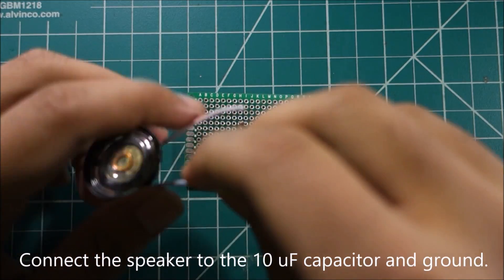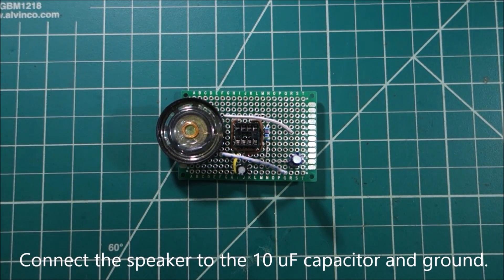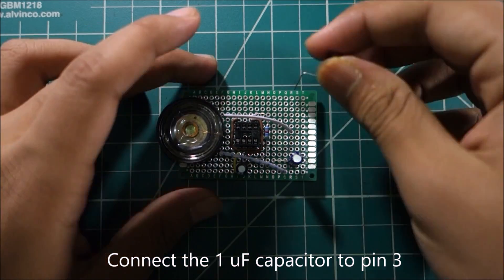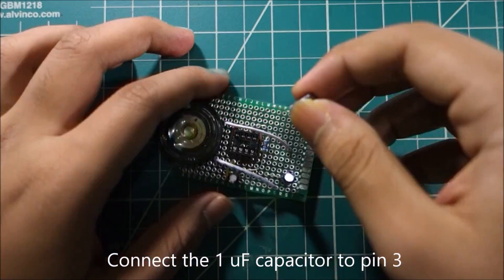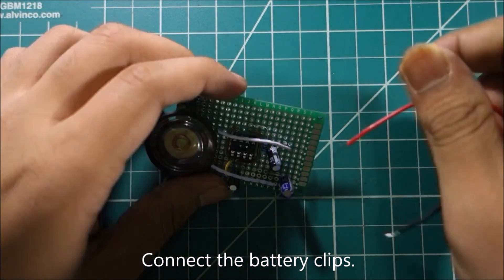Connect the speaker to the 10 UF capacitor and ground. Connect the 1 UF capacitor to pin 3. Connect the battery clip leads.